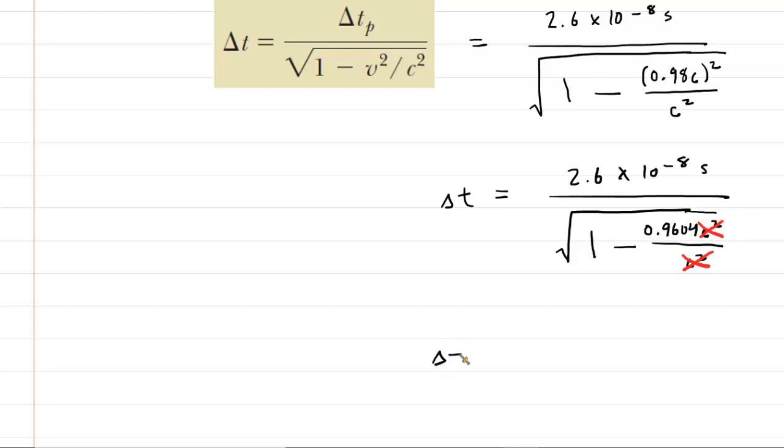So that makes the calculation much easier. And then at this point, you could probably type the rest of it into your calculator. And when you do so, you should get a delta t of 1.31 times 10 to the minus seven seconds. So this would be the time interval as measured by the person back on Earth, who is, again, moving with respect to the clock.